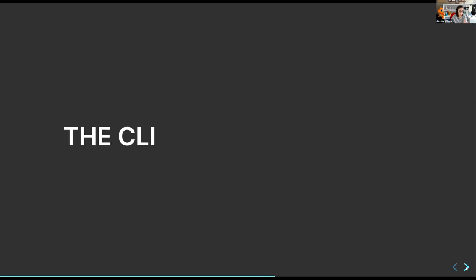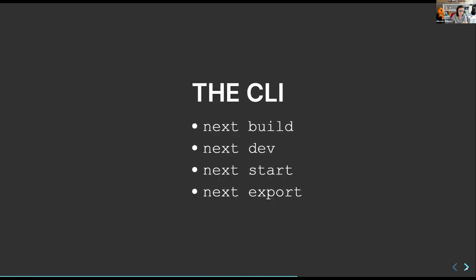The CLI is similarly simple. There's next build, which builds your site. Next dev runs a development server. Next start runs a production server. And next export exports your entire Next.js application as a static site. Typically, you'll run next dev to work on things locally, and the host — whether Netlify, AWS Amplify, Vercel, or others — will run next build, start, and export.